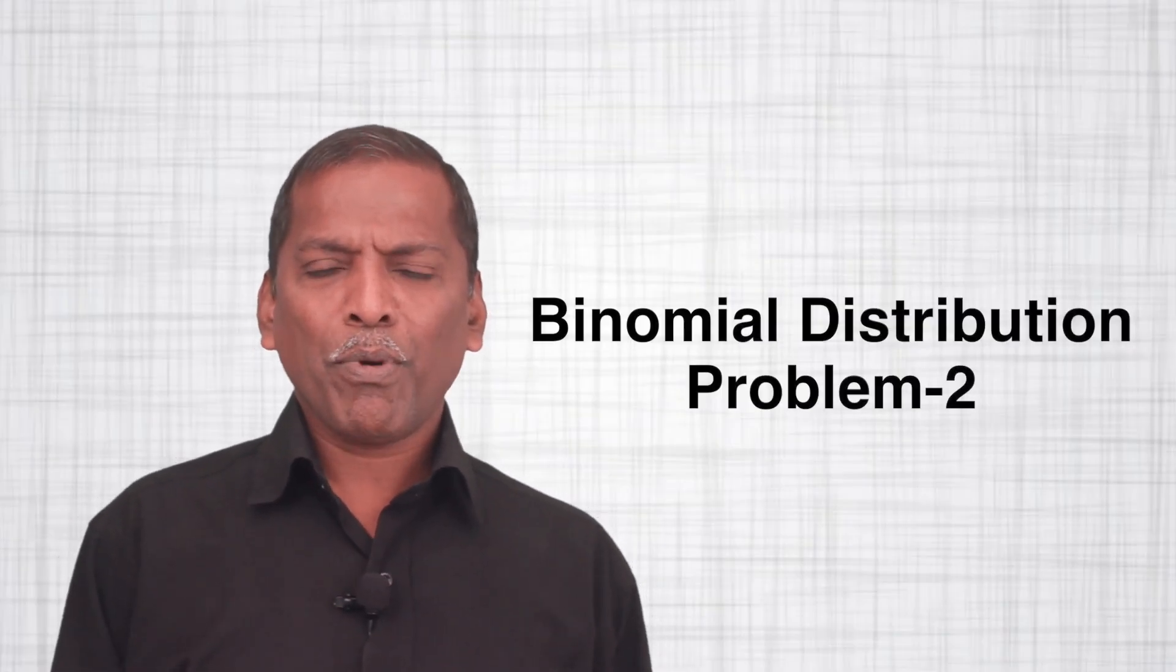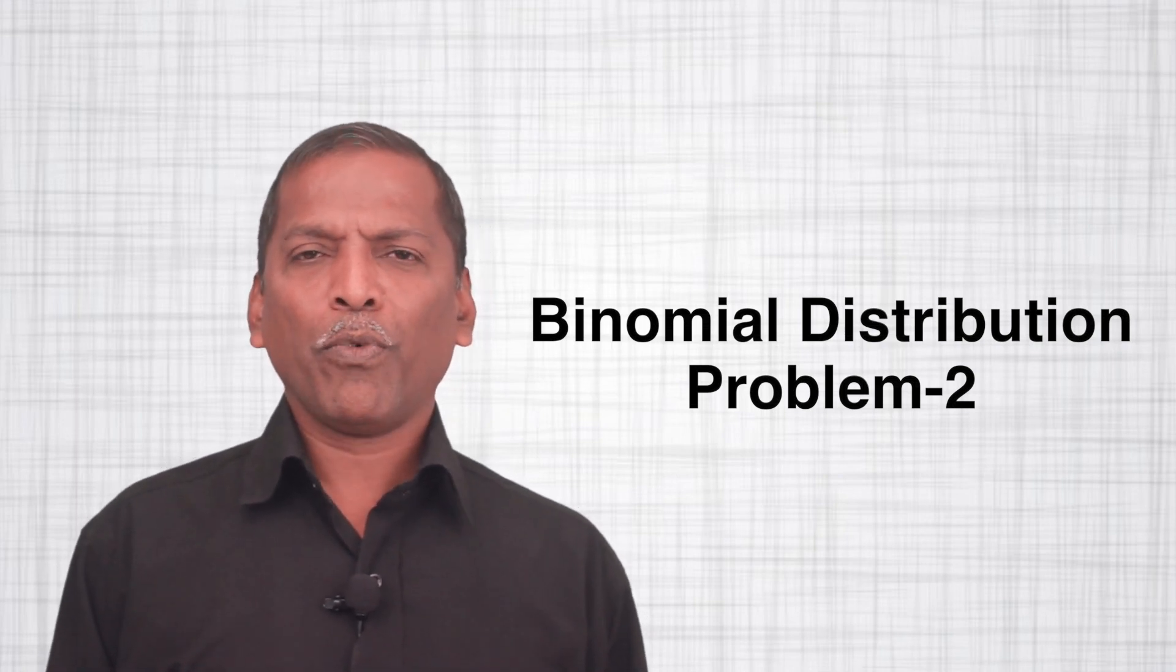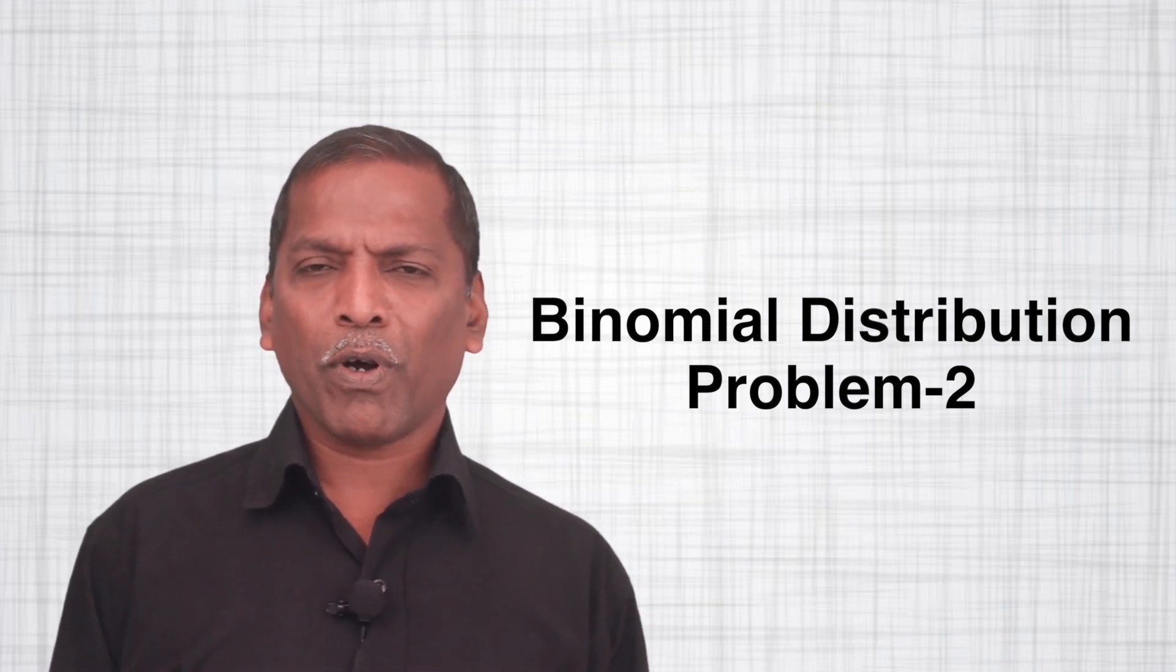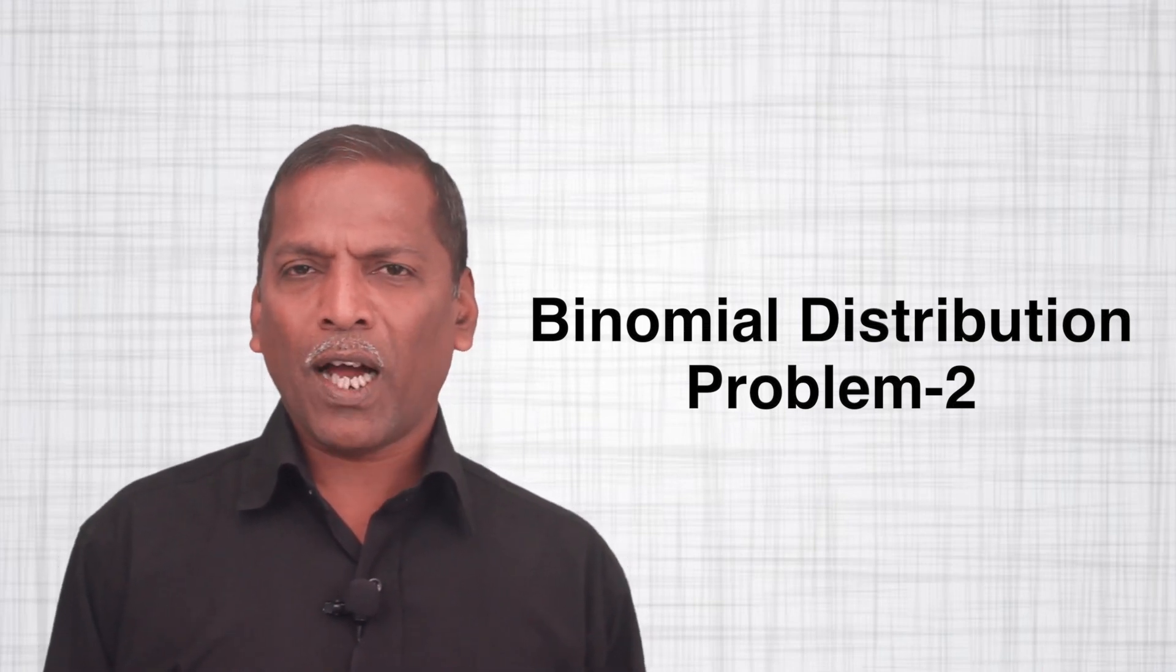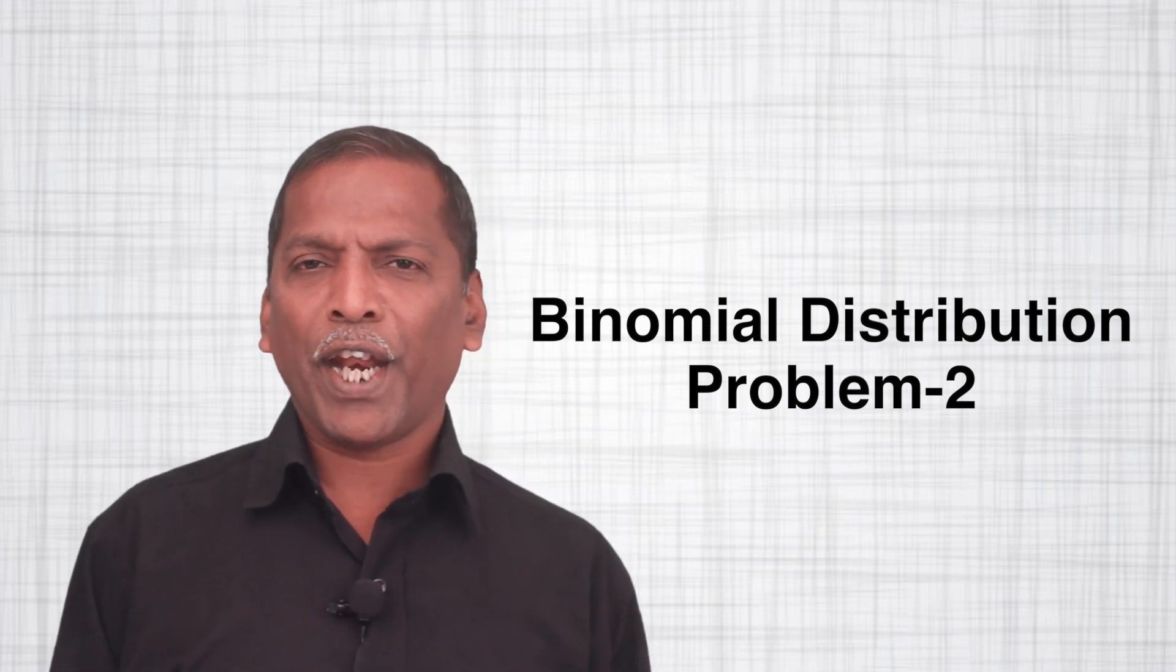Hello friends, now we see the binomial distribution problem 2. In this problem, we are given that probability of X equal to R success, and by using that formula, we have to find the expected value and variance of a random variable X.